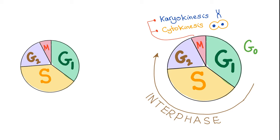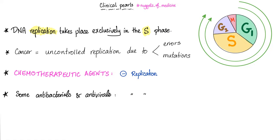Cell cycle is G0, G1, S, G2, M. What happens in M? M for mitosis. So, karyokinesis and cytokinesis. Now, let me give you some nuggets of medicine.